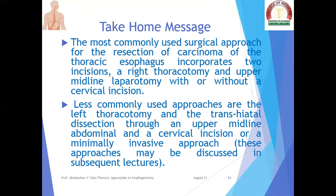The take-home messages: the most commonly used surgical approach for resection of carcinoma of the thoracic esophagus incorporates two incisions — right thoracotomy and upper midline laparotomy — with or without a cervical incision. Less commonly used approaches are left thoracotomy and transhiatal esophagectomy through an upper midline abdominal and a cervical incision, or a minimally invasive approach. These approaches may be discussed in subsequent lectures.